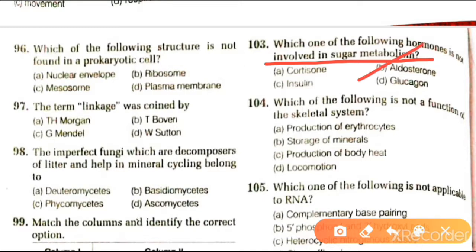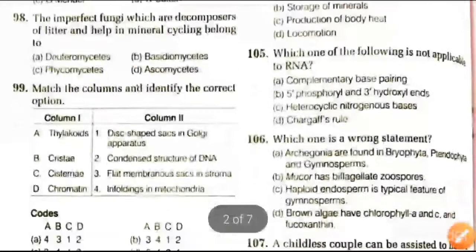Next question: which of the following is not a function of the skeletal system? Options are production of erythrocytes, storage of minerals, production of body heat, or locomotion. The answer is production of body heat, because the production of body heat is the function of muscles. The contraction of muscles produces heat which keeps the body warm during winters.